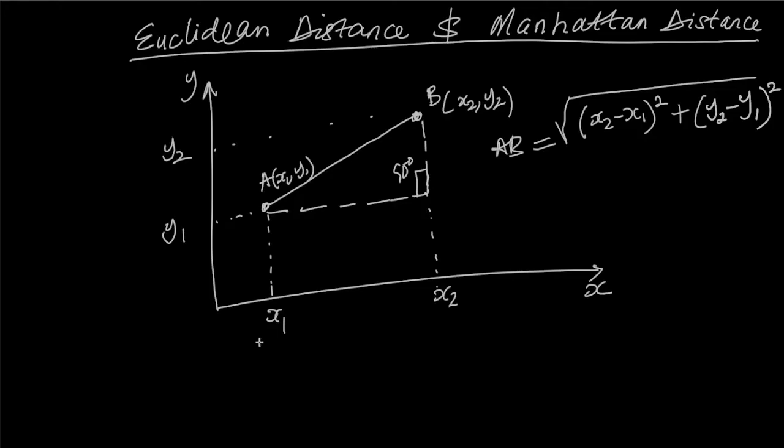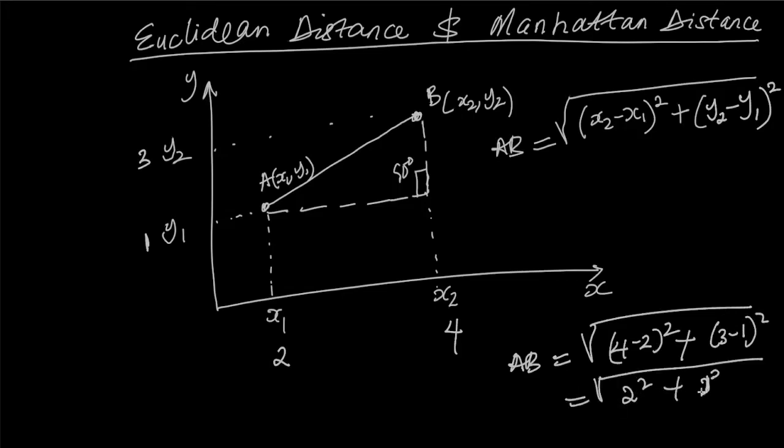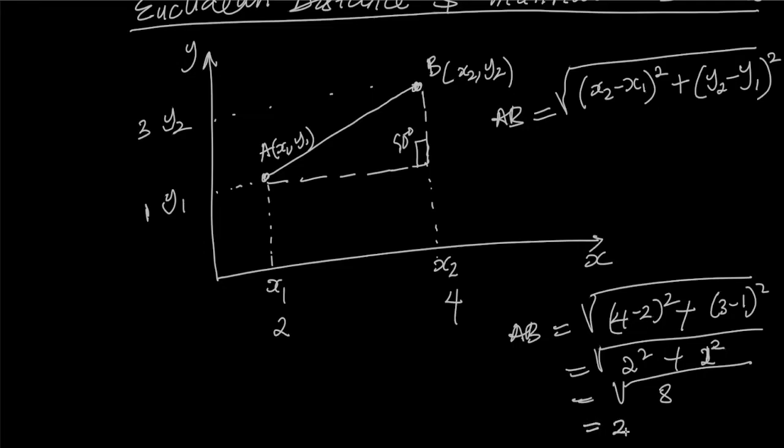What it means is, assume I have 2 here, I have 4 here. Say I have 1 here, I have 3 here. If you ask me to calculate the distance between A and B, I will simply do AB is equal to square root 4 minus 2 square plus 3 minus 1 square. That is 2 square plus 2 square. This equals to what? 4 plus 4. That is 8. This equals to 2.82. So the distance between A and B is 2.82.